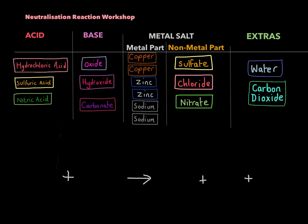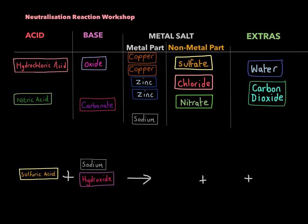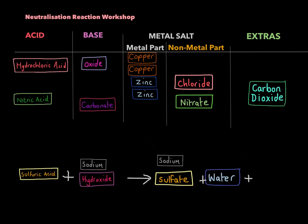Okay, let's try something else. Let's try sulfuric acid. And this time I'm making a base with sodium, so I've got sodium hydroxide and sulfuric acid. What's the metal salt I will make? The metal part would be sodium, because I have sodium in the reactants. And because it's sulfuric acid, I will make sodium sulfate. So just move that down here. And I'll make water as well, because it's a hydroxide.